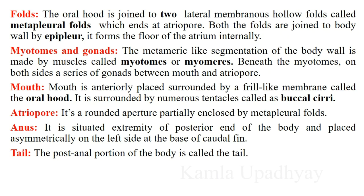Amphioxus has three named apertures: mouth, atriopore, and anus. The mouth is anteriorly placed behind the rostrum within the oral hood, which is surrounded by numerous tentacles called buccal cirri. The atriopore is formed by the posterior end of the metapleural folds. The anus is placed in the caudal fin region. The post-anal portion of the body is called the tail.